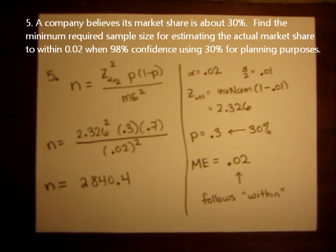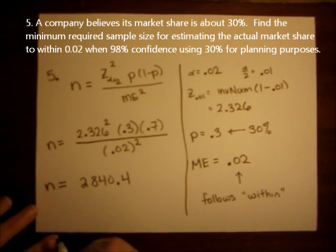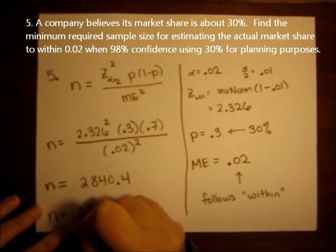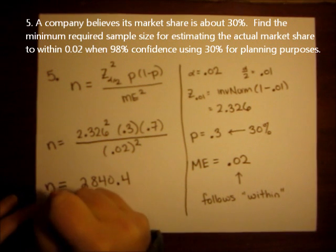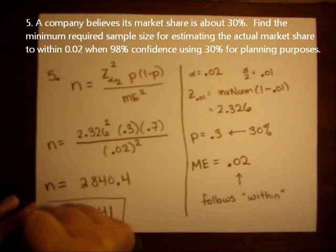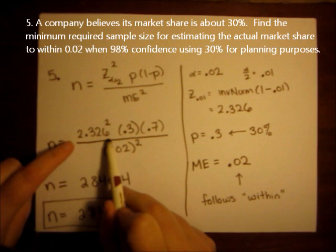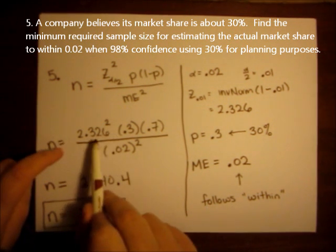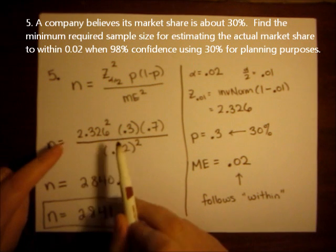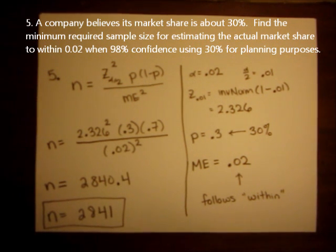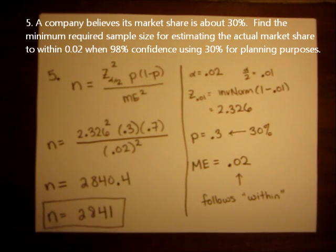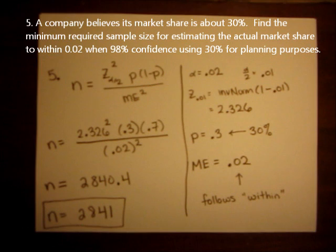I always answer as a whole number, and I always round up. So this means my answer should be 2,841. Note that if you rounded this number a little bit differently — if you kept four or five decimal places — your answer might be a little bit different. So if you kept more decimals for z alpha over 2, you might have actually gotten 2,842 as your final answer.